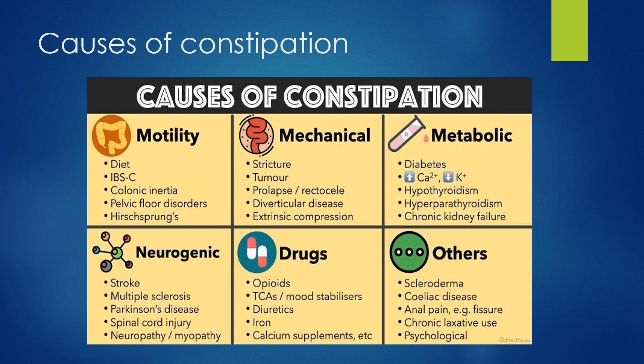Metabolic reasons may be due to diabetes, hypercalcemia, hypokalemia, hypothyroidism, hyperparathyroidism, and chronic kidney failure. Neurogenic reasons may be due to stroke, multiple sclerosis, Parkinson's disease, spinal cord injury, neuropathy, or myopathy. Pharmacological reasons may be due to drugs like opioids, TCAs, mood stabilizers, diuretics, iron supplementation, calcium supplements, and other drugs. Other reasons may include scleroderma, celiac disease, anal pain like fissures, chronic laxative use, and psychological reasons.